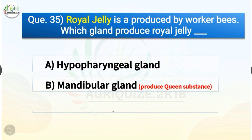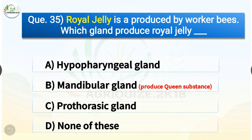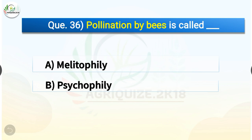Question number thirty-five: royal jelly is produced by worker bees — which gland produces royal jelly? Options are hypopharyngeal gland, mandibular gland, prothoracic gland, or none of these. The correct answer is option A, hypopharyngeal gland. The hypopharyngeal gland produces royal jelly, whereas mandibular glands produce the queen substance.